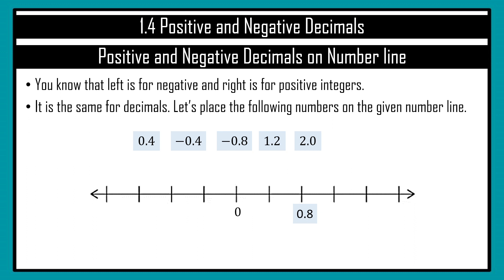In this given number line, there is already 0 indicated as well as 0.8. So from 0 to 0.8, there are 2 sub-slots. So it means that I need to divide 0.8 by 2. Once you divide 0.8 by 2, you notice that it is 0.4. So each section represents 0.4.